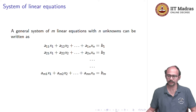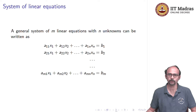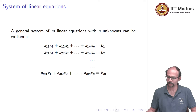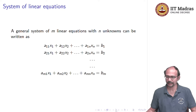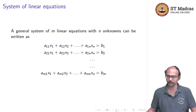A general system of m linear equations with n unknowns is: a11·x1 + a12·x2 + ... + a1n·xn = b1, all the way up to am1·x1 + am2·x2 + ... + amn·xn = bm. There are n unknowns (the xi's) and m equations, and for each equation we have a constant on the right-hand side — for the ith equation the constant is bi.